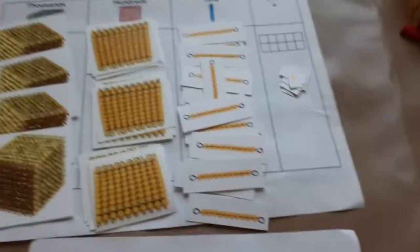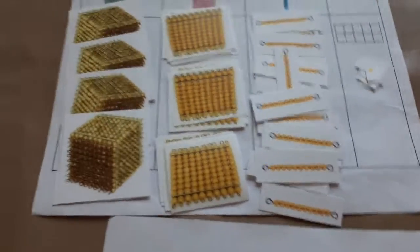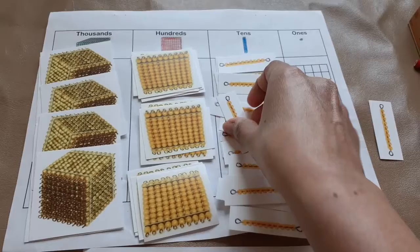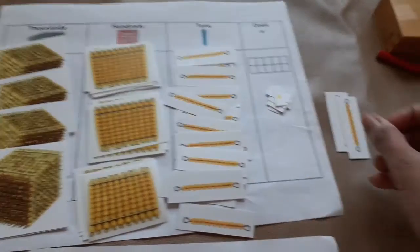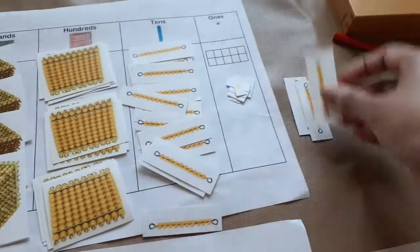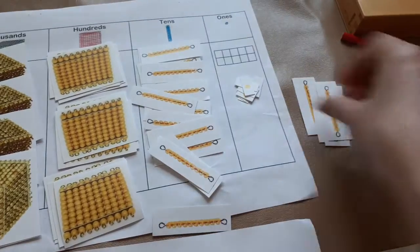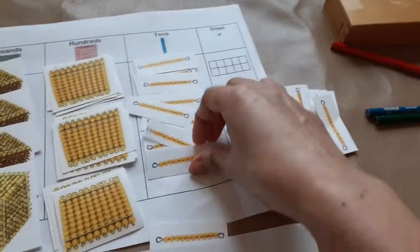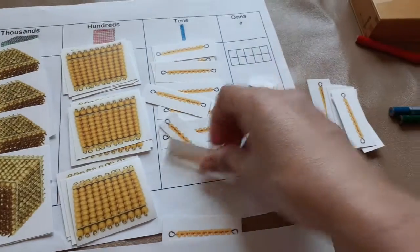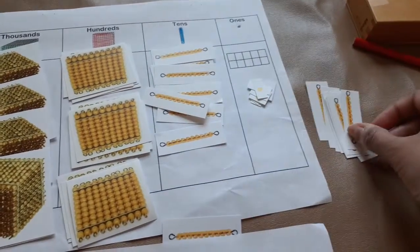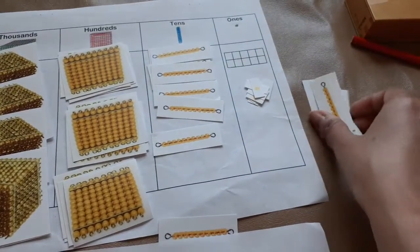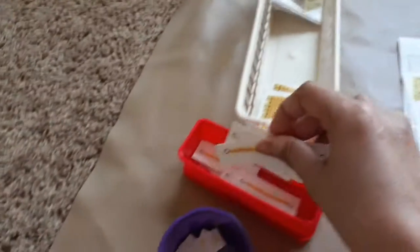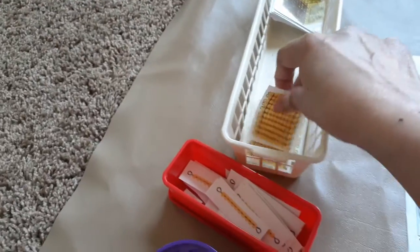Now, I'm going to start exchanging my 10 bars. 1 ten, 2 tens, 3 tens, 4 tens, 5 tens, 6 tens, 7 tens, 8 tens, 9 tens, 10 ten bars. 10 ten bars make 100.